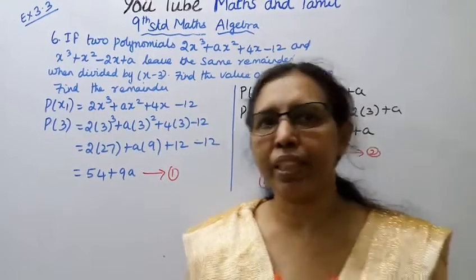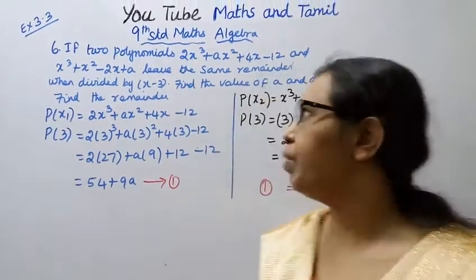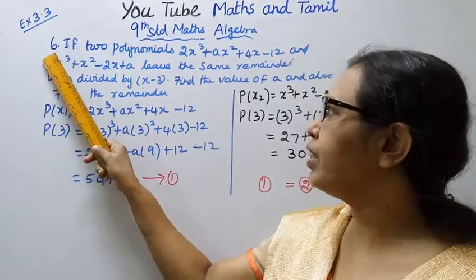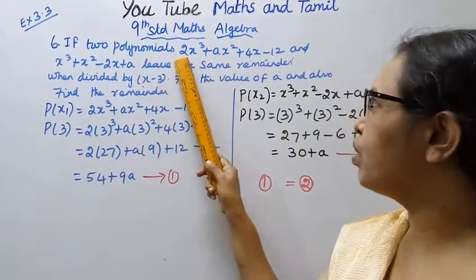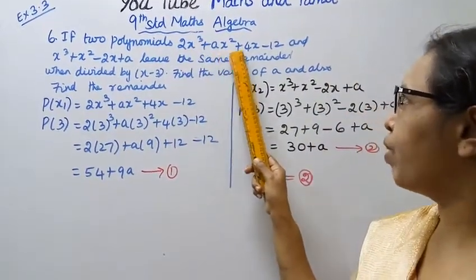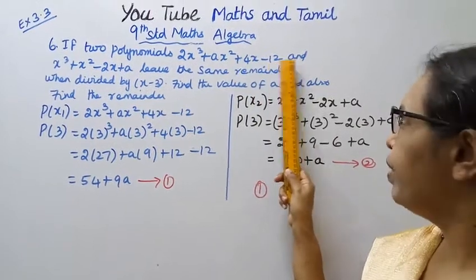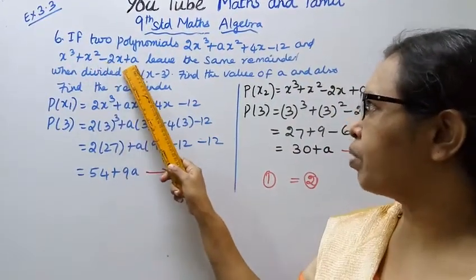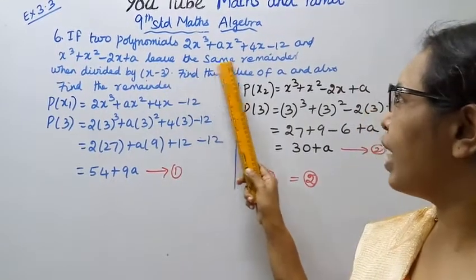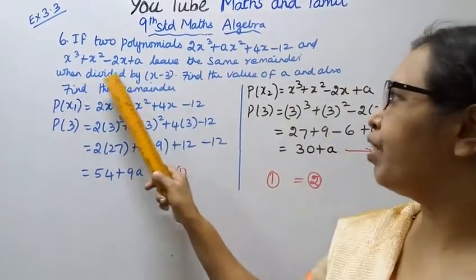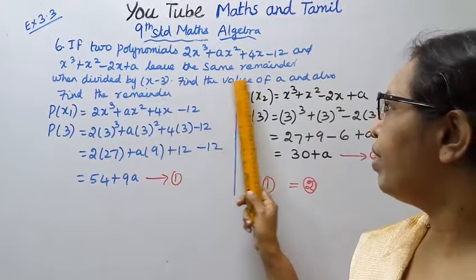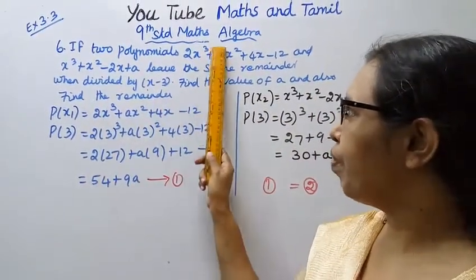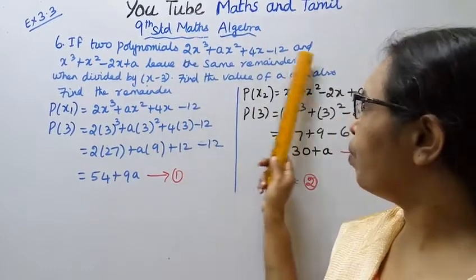Hello students, welcome to Max and Tamil channel. 9th Standard Math Algebra exercise 3.3: if 2 polynomials 2x³ + ax² + 4x - 12 and x³ + x² - 2x + a leave the same remainder when divided by x - 3, find the value of a and also find the remainder.